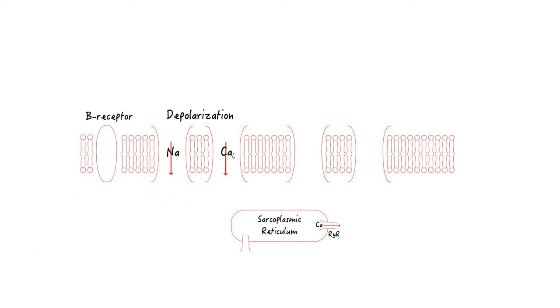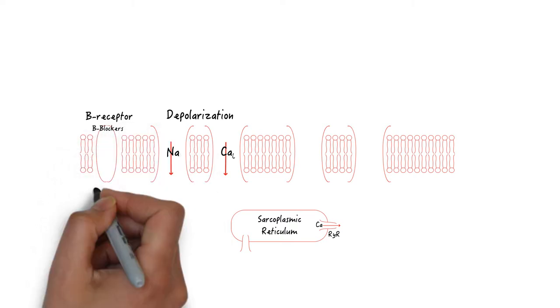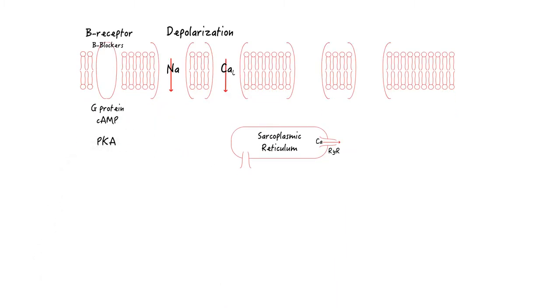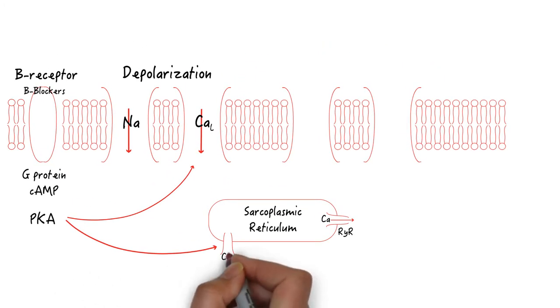Beta receptors catalyze this process. Its activation stimulates G proteins and then cyclic AMP, followed by PKA, which phosphorylates L-type calcium channels. This allows more calcium to flux in. PKA also phosphorylates the phospholamban channels, which stores calcium into the sarcoplasmic reticulum to allow for more calcium to flux out during the next contraction.